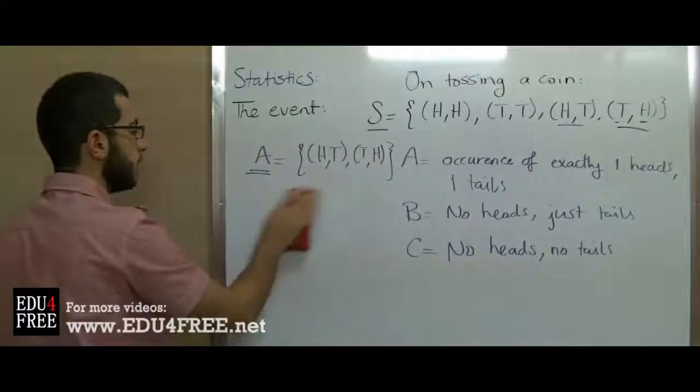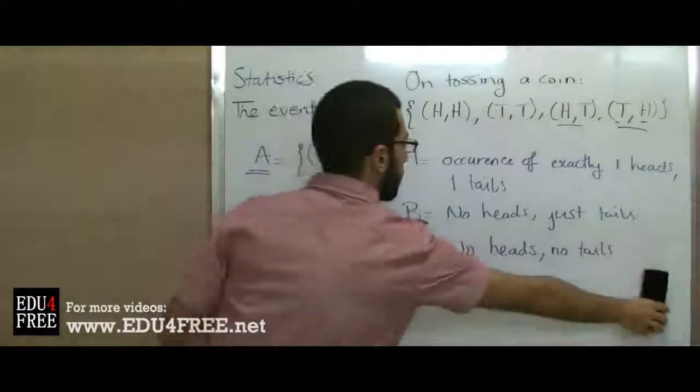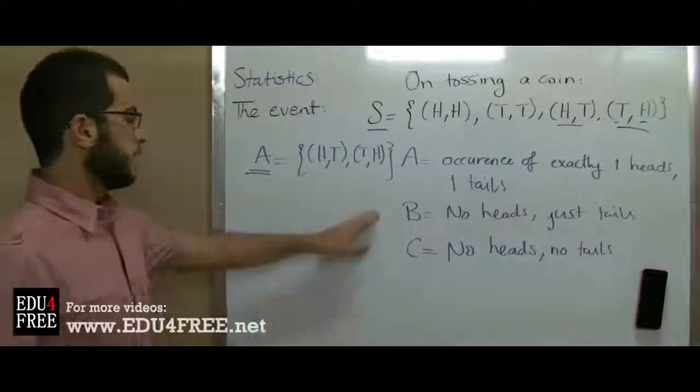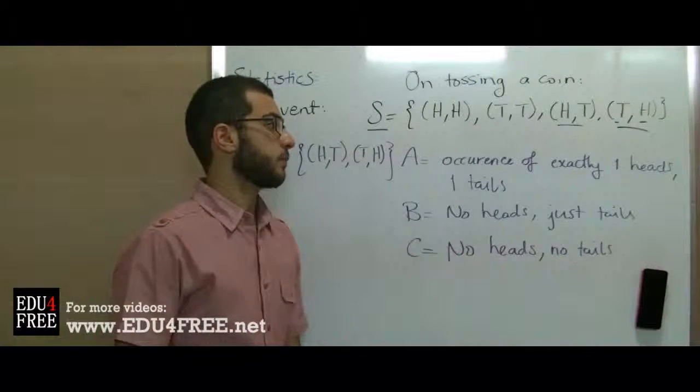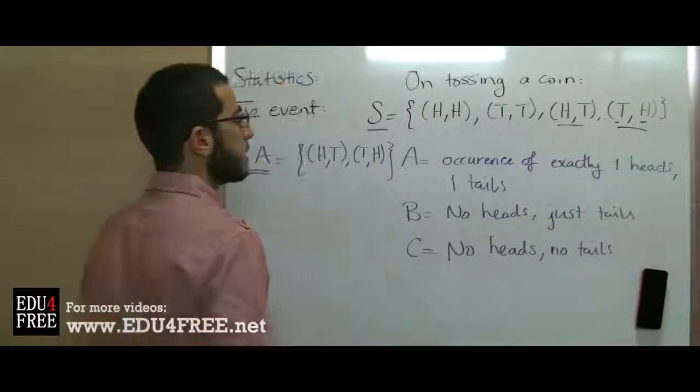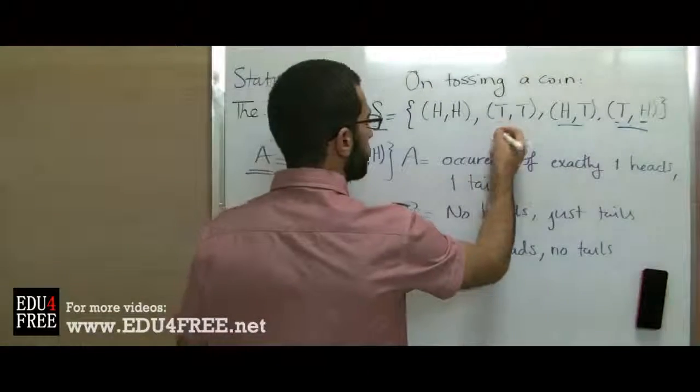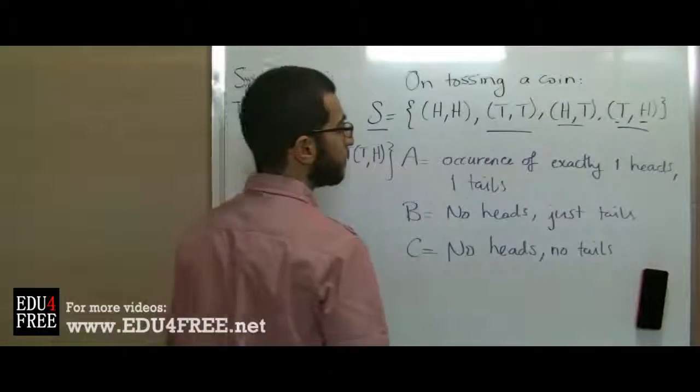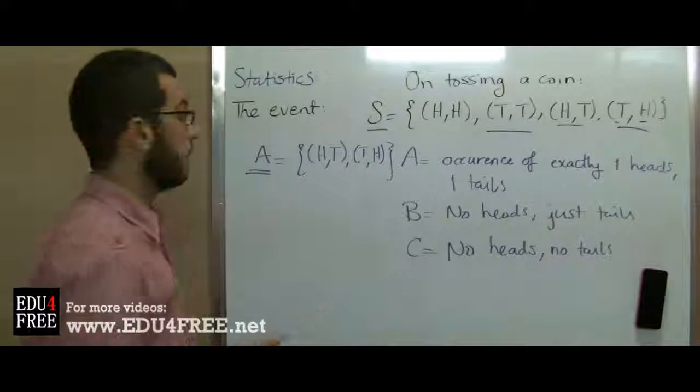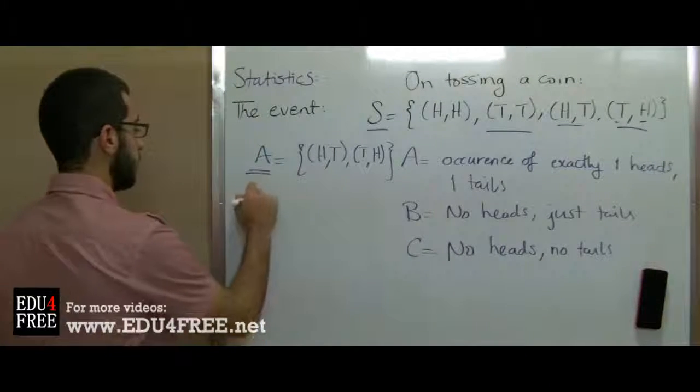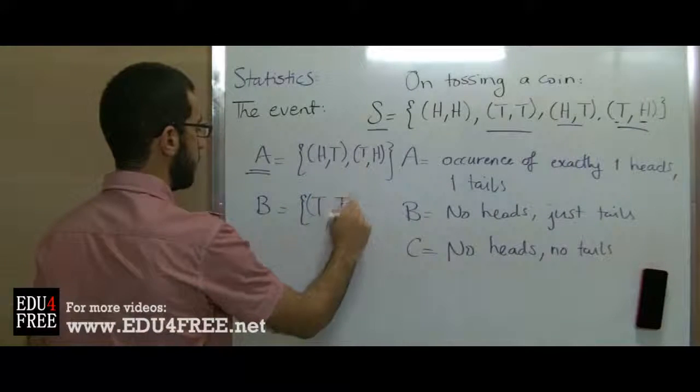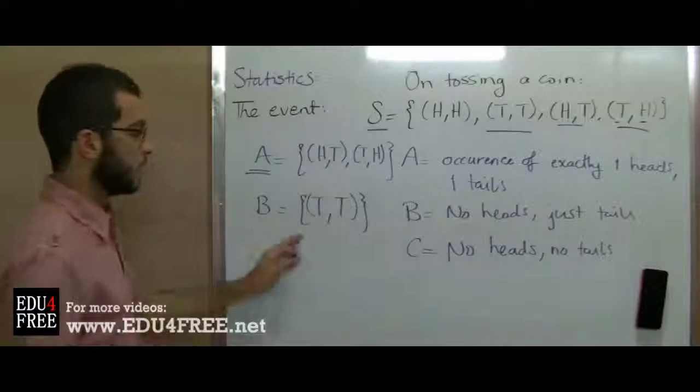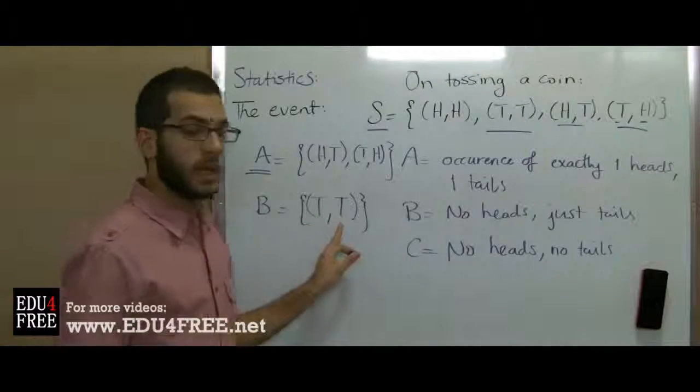Let's see B. B has the condition which is no heads, just tails. So this can be found in this one. We have no heads here and no other element. So B will equal only this element: tails-tails.